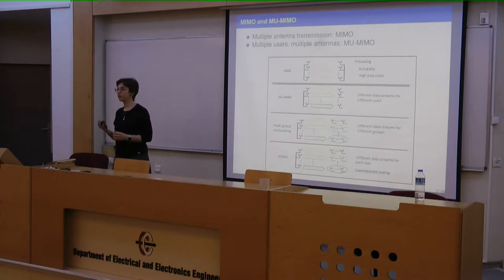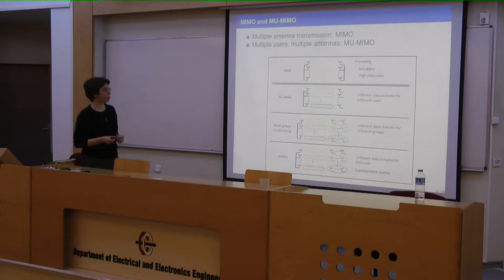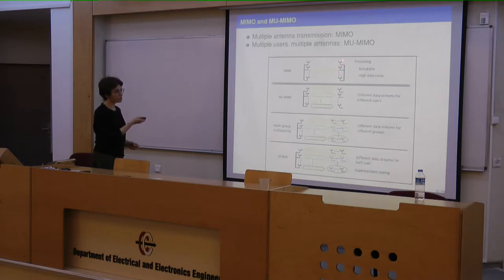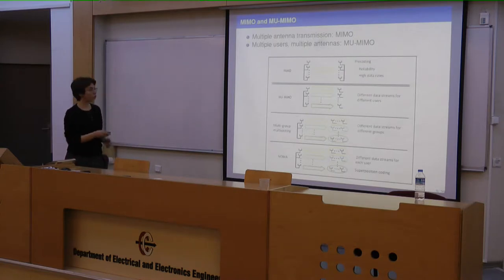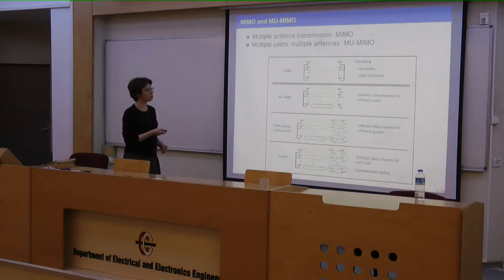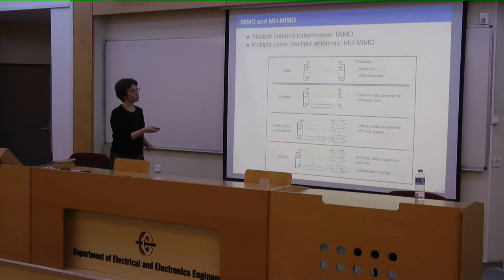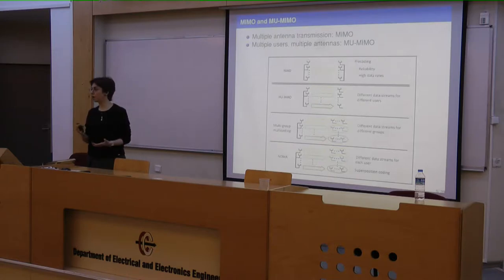Multiple antenna communication is a very basic tool in attaining higher data rates because it provides multiplexing gain and can increase the achievable data rates linearly with the minimum number of antennas at the transmitter and receiver. The basic scheme can be a point-to-point system with multiple antennas at both ends. In multi-user MIMO, the multiple antenna terminal is generally the base station, and single antenna users such as personal cellular phones communicate with the base station simultaneously. With processing, you can send different data streams to different users at the same time.